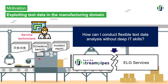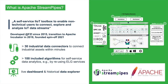So what exactly is StreamPipes? In general, StreamPipes is a self-service industrial IoT toolbox focused on non-technical users to connect, explore, and analyze IoT data streams. StreamPipes was originally initiated by developers at the FZI Research Center for Information Technology in Karlsruhe in 2015, and was transitioned to the Apache Software Foundation in 2019, where it is further actively developed by a global developer base.